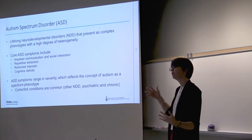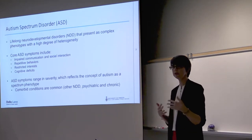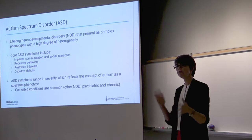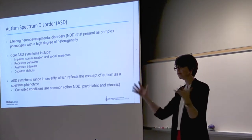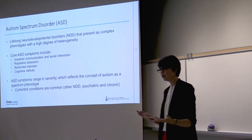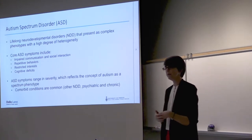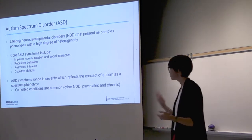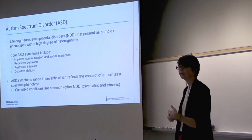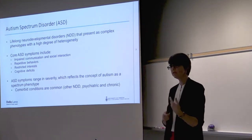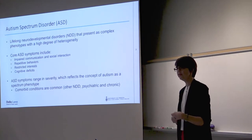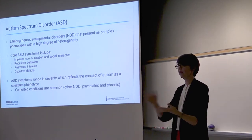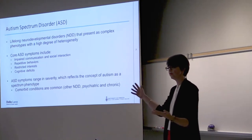Along with these core symptoms come a range of comorbidities that frequently co-occur with autism. These could be other neurodevelopmental disorders — there's a lot of overlap with ADHD, OCD, intellectual disability, and anxiety. These kids also have increased incidence of other psychiatric conditions like schizophrenia, as well as other chronic conditions like asthma, epilepsy, sleep disorders, and GI issues. This all really contributes to the complex nature of an autism diagnosis and what it means for these kids' diagnostic trajectory and future.